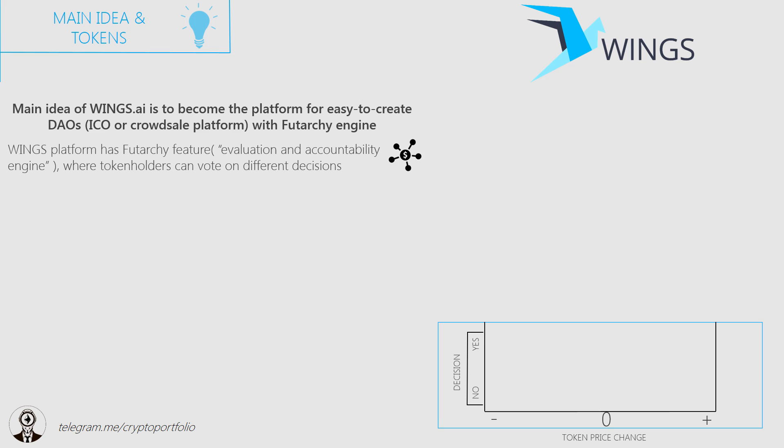The horizontal axis has the expected outcome of both decisions. If the decision is expected to increase the price of project tokens, the voters will lean more towards the right side. If the decision is expected to decrease the price, towards the left side. The same voting mechanism is applied to the 'no' vote — you choose if the decision to do nothing will impact the price of project tokens.